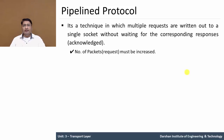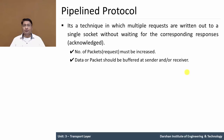In pipeline protocol, the number of packet requests must be increased, meaning the number of sequence numbers must also be increased. Previously the sequence number was either 0 or 1, but now sequence numbers will increase. Data or packets should be buffered at the sender or receiving side, because when we send multiple packets, the packets must be buffered for transmission.